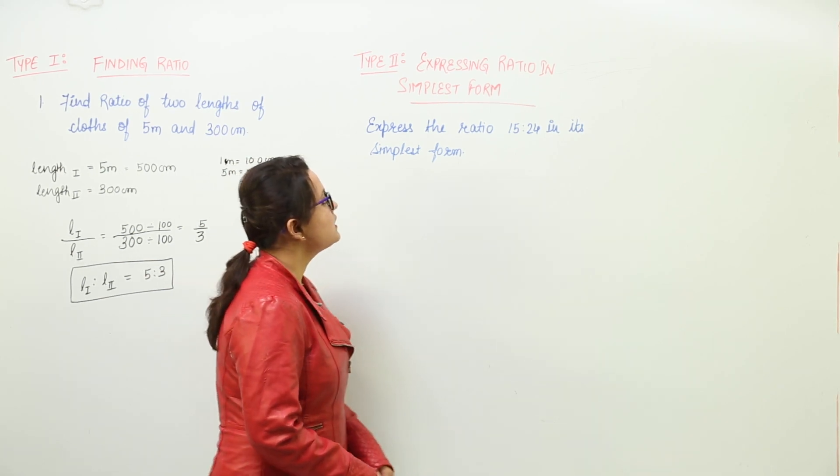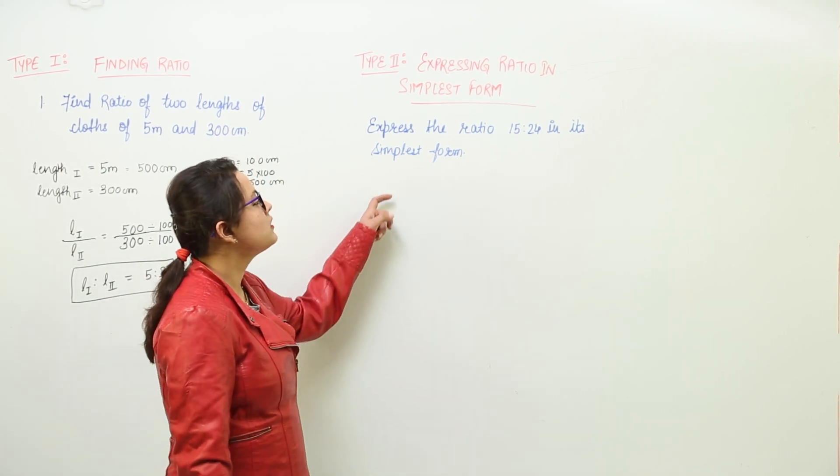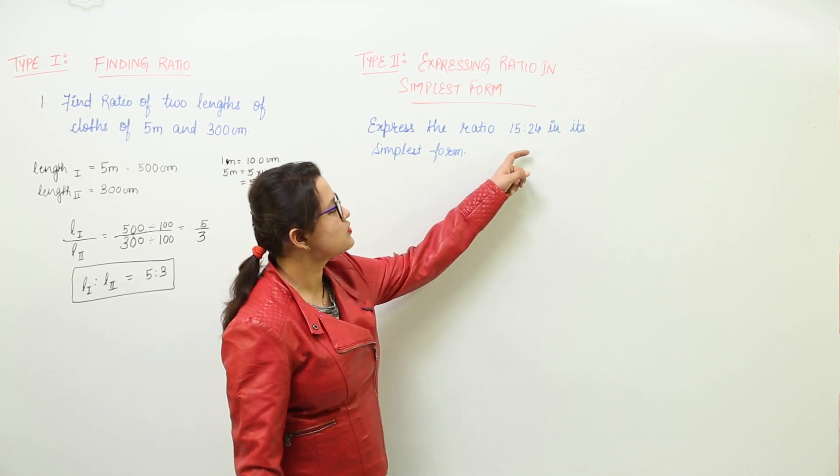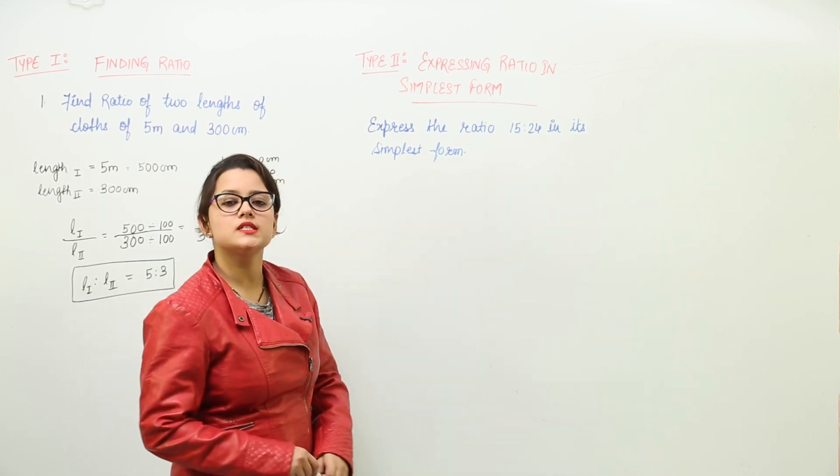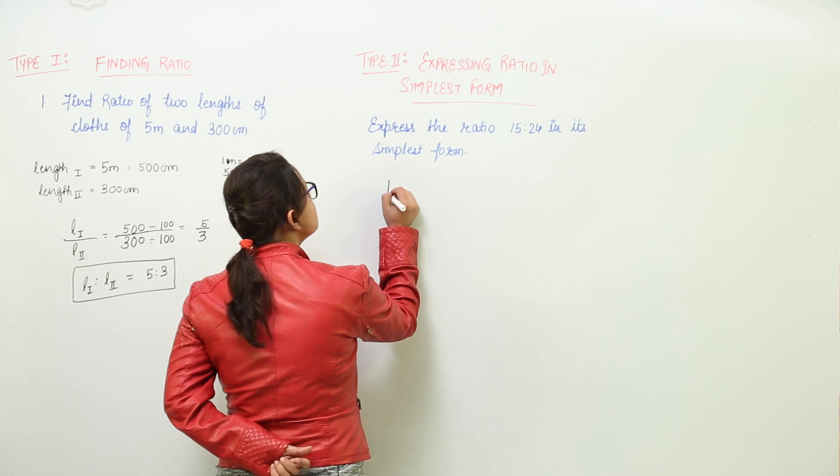Type 2 is expressing the ratio in simplest form. Now we have to express the ratio 15 is to 24 in the simplest form. So let us write this down.